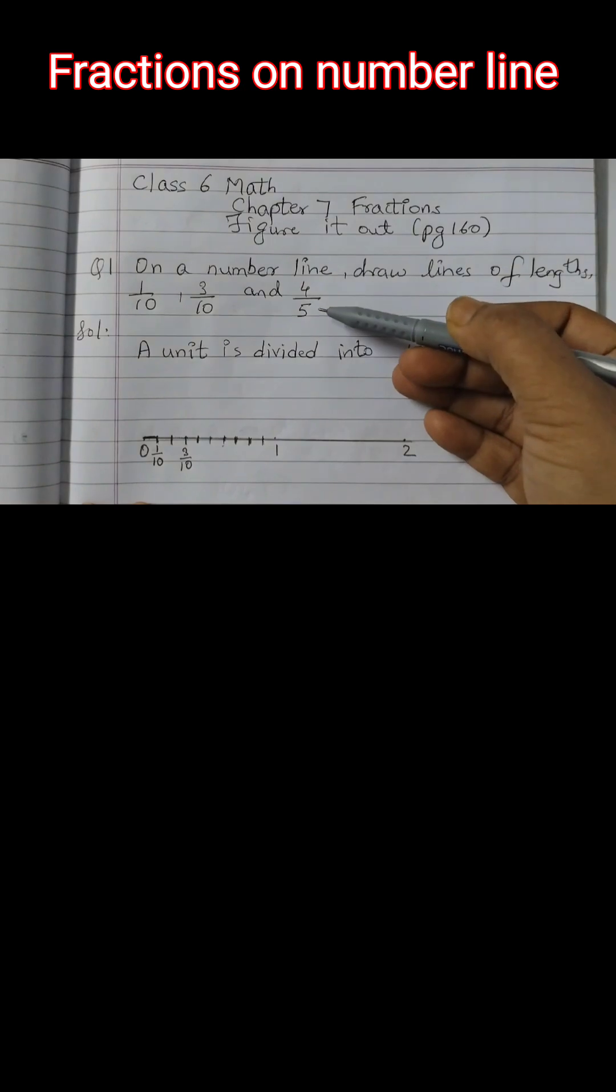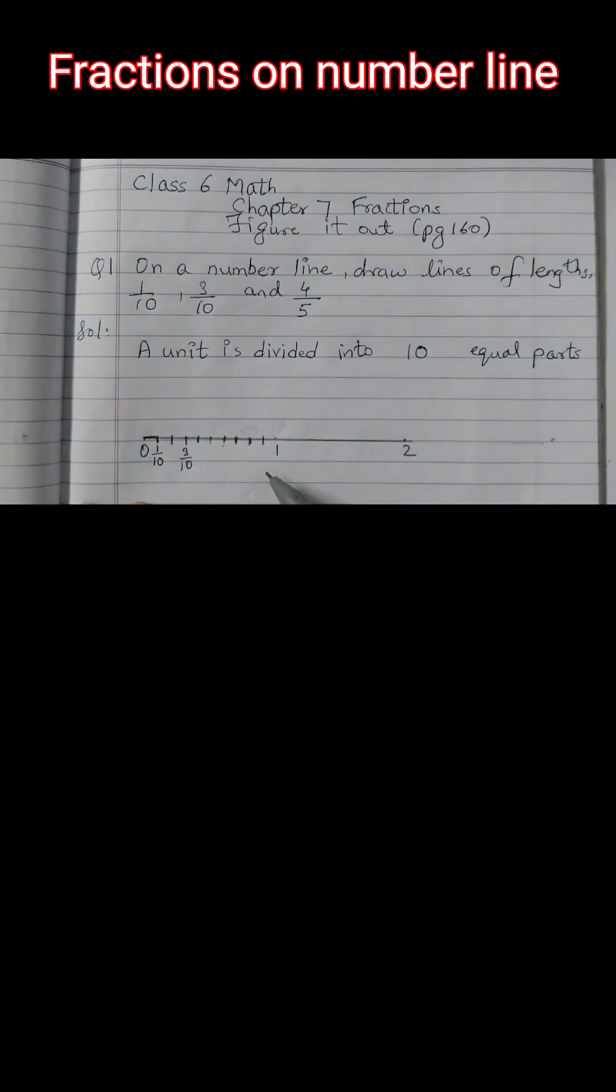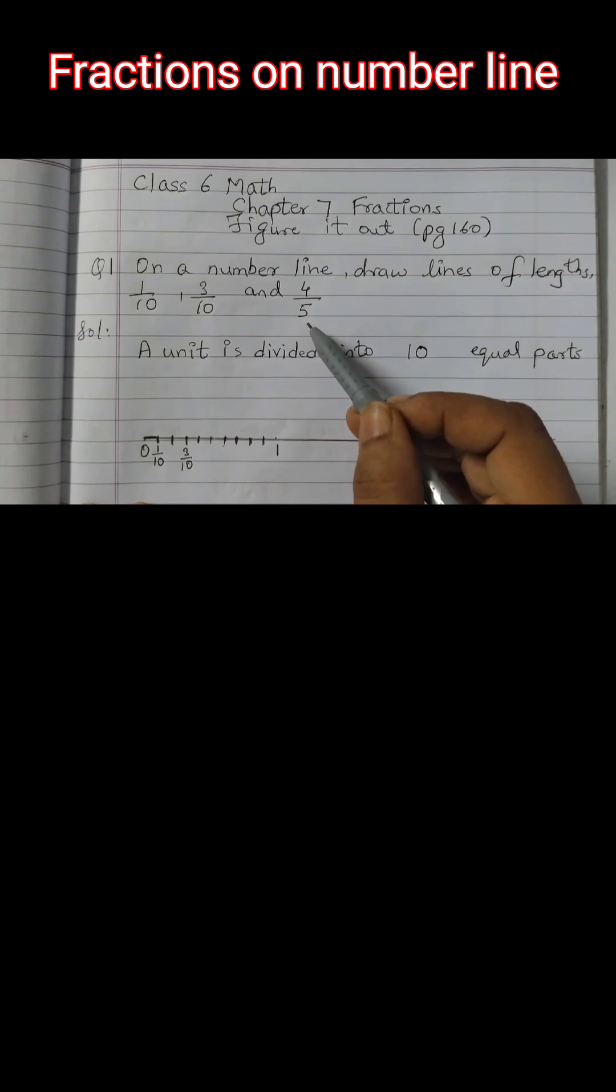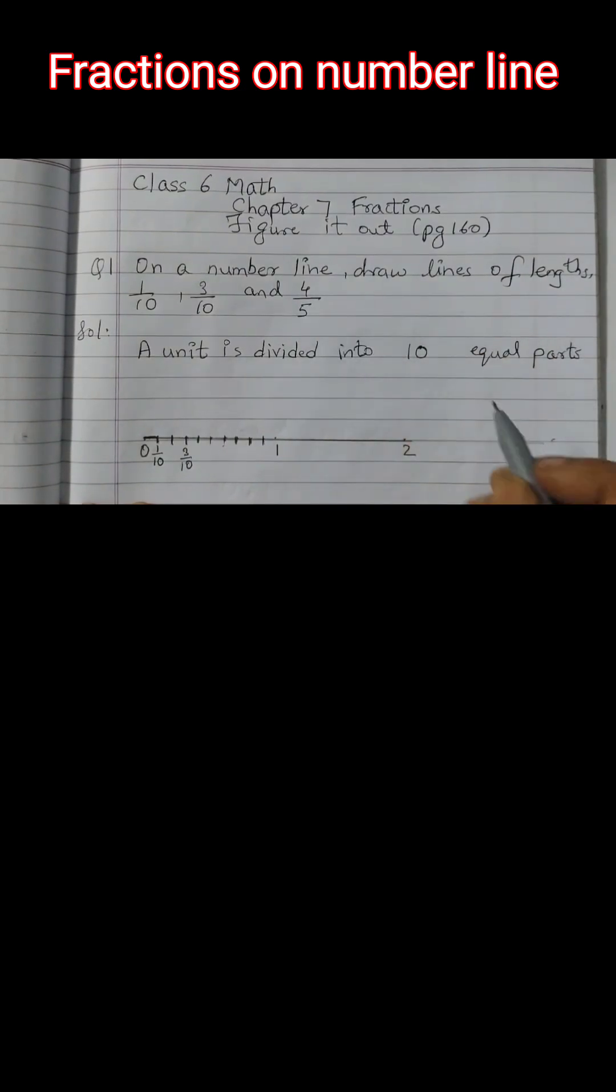Now how do I show 4 upon 5? Because this is divided into 10 equal parts and here it's divided into 5 equal parts. Right? So I can write this as, see 4 upon 5. If I make this denominator 10, then I can show this on this number line. So I will multiply this by 2 because I know 5 into 2 is 10. So here also I have to multiply.